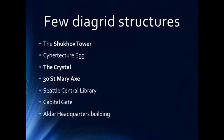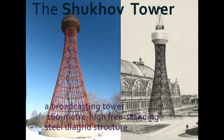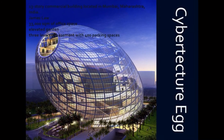A few notable diagrid structures include the Shukhov Tower, Cybertecture Egg, The Crystal, 30 St Mary Axe, Seattle Central Library, Capital Gate, and Elder Headquarters Building. The Shukhov Tower is a broadcasting tower that is 160 meters high. It is a freestanding steel diagrid structure built between 1920 and 1922 during the Russian Civil War, located a few kilometers south of the Moscow Kremlin.